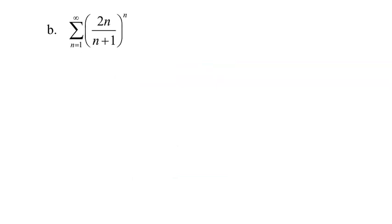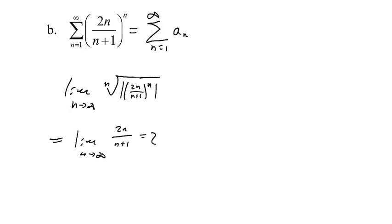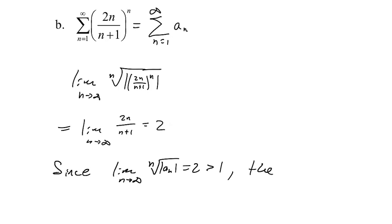For the next example, with a_n = (2n/(n+1))^n, I take the limit as n approaches infinity of the nth root of |a_n|. The nth root cancels the exponent n, giving the limit as n approaches infinity of 2n/(n+1). Since the powers are the same, the horizontal asymptote is 2. Since 2 is greater than 1, the series diverges by the root test.